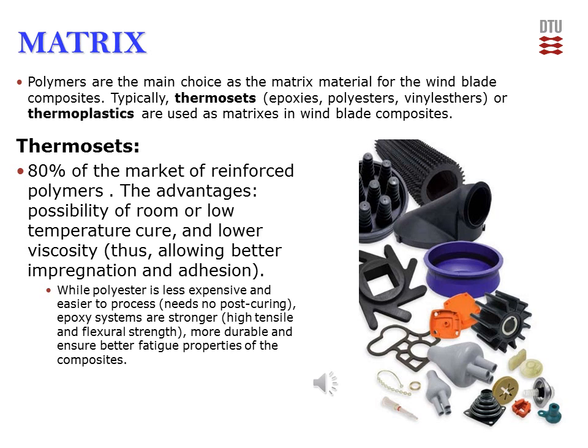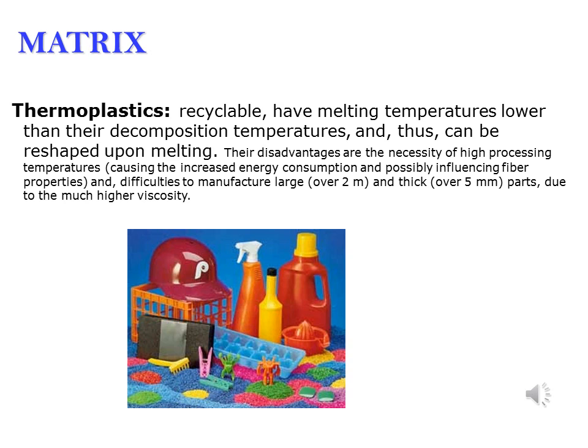Polymers represent a common matrix material for wind blade composites. Thermoset-based composites represent around 80% of the market of reinforced polymers. The advantages of thermosets are the possibility of room or low temperature cure and lower viscosity. Initially polyester resins were used for composite blades, but epoxy resins are now used most often as matrices of wind blade composites. While polyester is less expensive and easier to process, epoxy systems are stronger and more durable. Thermoplastics represent an interesting alternative — their important advantage is recyclability — but disadvantages include the necessity of high processing temperatures and difficulties manufacturing large parts due to high viscosity.